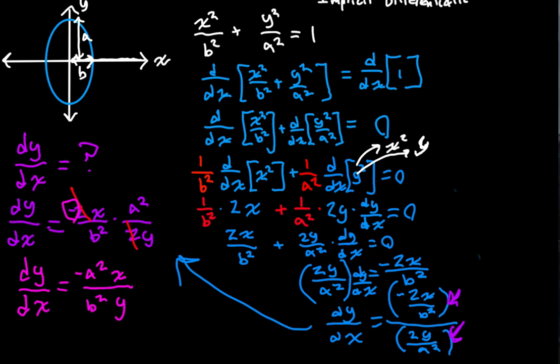You'll remember the derivative of a circle was negative X over Y. So, you can see how a different semi-major and semi-minor axis, which creates an ellipse, will change the derivative at any given point. Obviously, if A were equal to B, the derivative would be the same as a circle, because the ellipse would be a circle. I hope this was interesting.